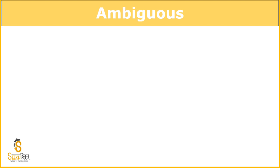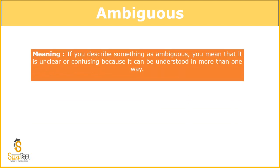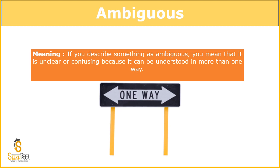So the next word is ambiguous. Ambiguous means when any thing is not certain, something that is so unclear that it causes confusion. Some people's words can be confusing, some people's language can be confusing, some people's behavior can be confusing. The meaning: if you describe something as ambiguous, you mean it is unclear or confusing because it can be understood in more than one way. Like a photo that says 'one way' but has arrows pointing in both directions — so it's confusing, it's an ambiguous picture. Like our optical illusions — they are also ambiguous because one can interpret them in more than one way. Ambiguity is a very well-known term.